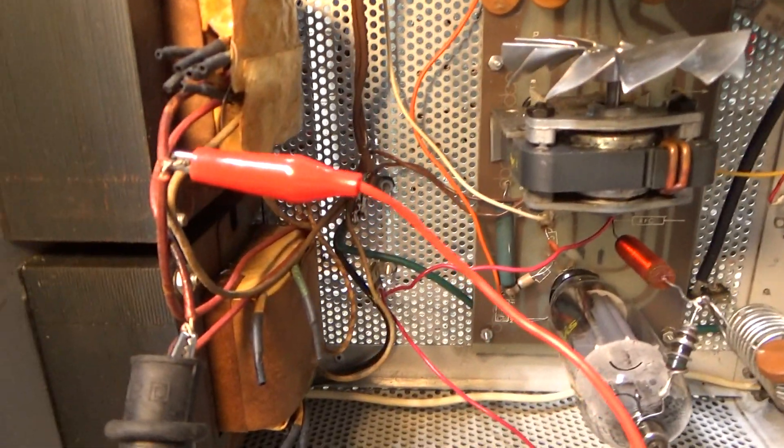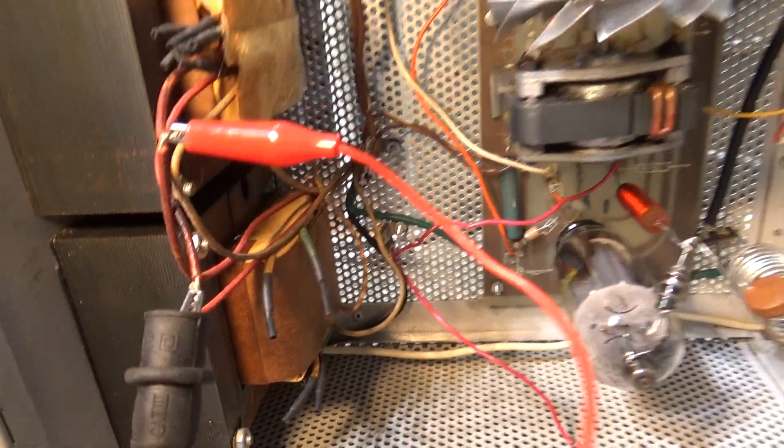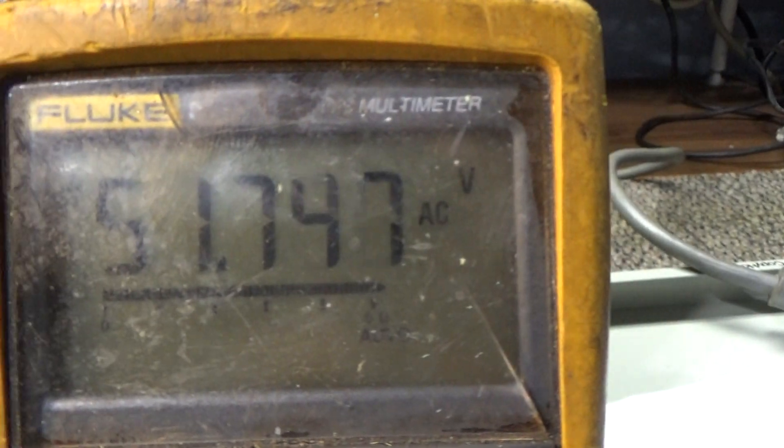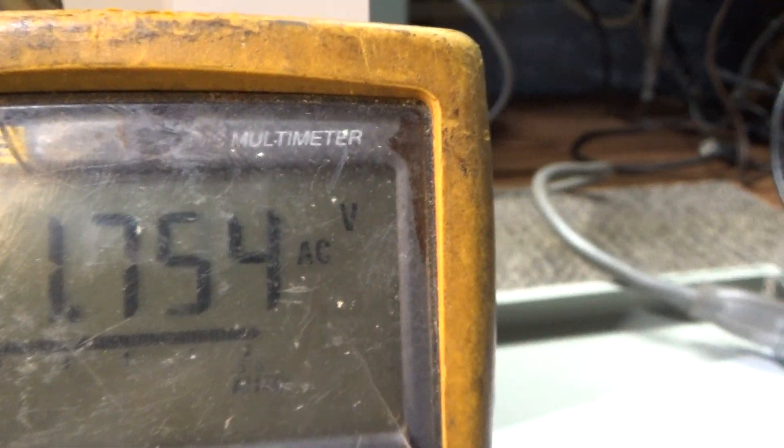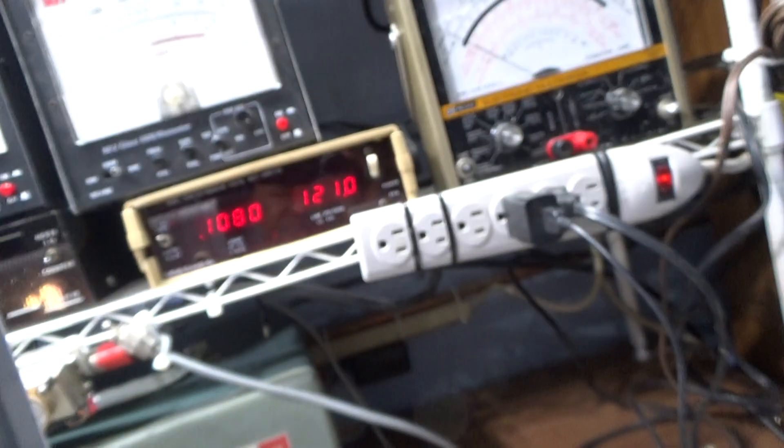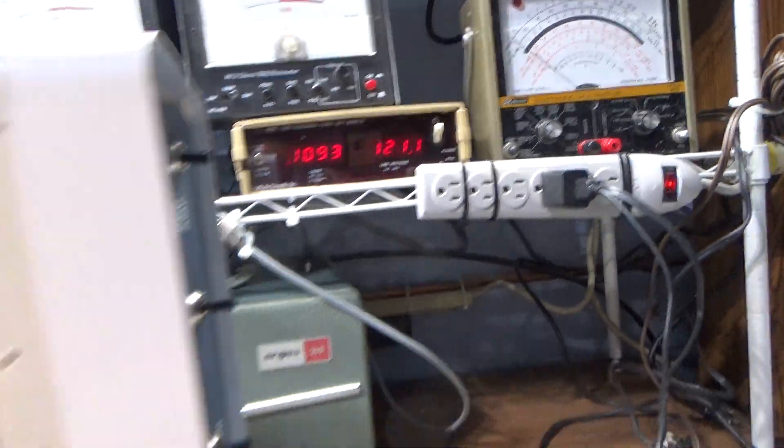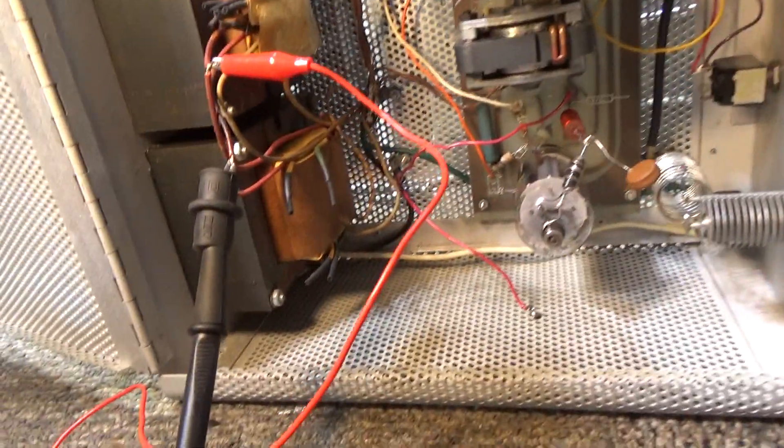If it was out of phase right now, I would have, instead of 50, I would probably have one or two volts if that. The current would be five, ten amps instead of 0.1 amps.